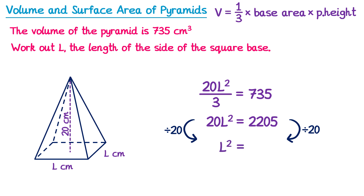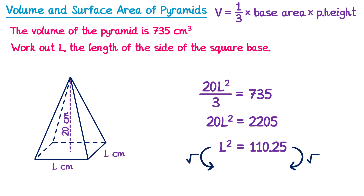On the right-hand side 2205 divided by 20 is 110.25. Now this isn't the value of l — this is l squared — so we need to square root both sides of the equation. If you square root l squared you get l, and if you square root 110.25 you get 10.5. So the answer to this question is l equals 10.5 centimetres.